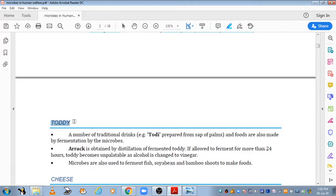Next is toddy. What is toddy? There are many traditional drinks that are made from fermentation. Toddy is a South Indian traditional drink which is made from the sap of palm. When we distill this toddy, then it becomes an alcoholic beverage known as arrack. If allowed to ferment for more than 24 hours, it becomes unpalatable. Unpalatable means that taste will change. We don't like it because it slowly converts to vinegar.